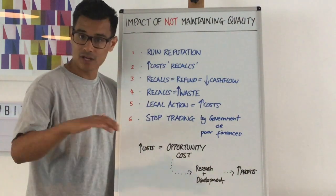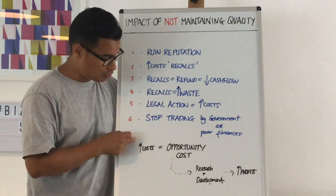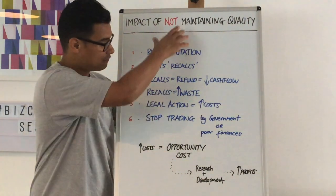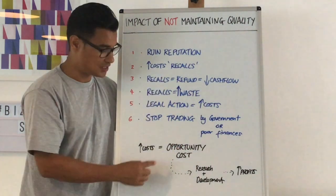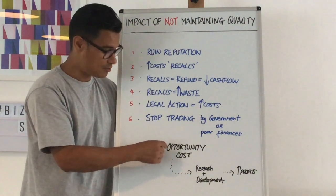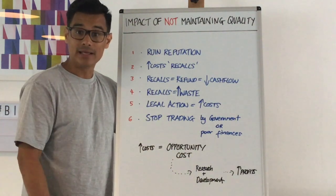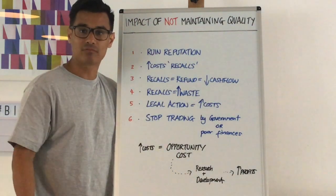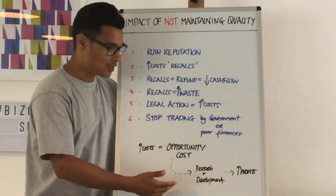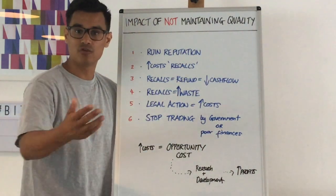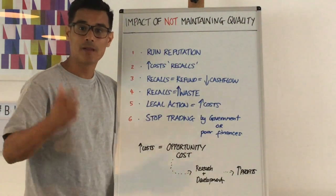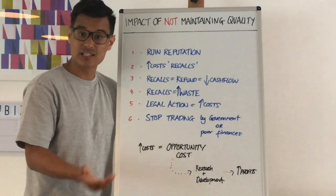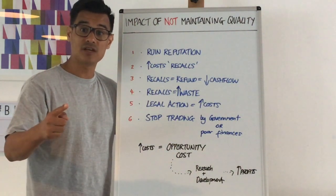Another thing to consider if it's an evaluation question: increased costs mean there's an opportunity cost. All those extra costs you faced because you didn't maintain quality — if you had maintained quality, you could have used that money for something else, like research and development to find a new product that would increase profits and, for a public limited company, increase share prices. But because you didn't maintain quality, you don't have that money. That's the opportunity cost. Hope that helps — good luck.